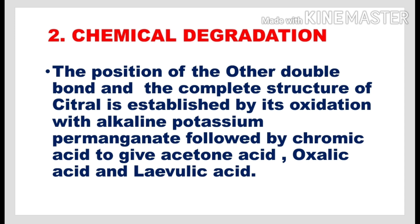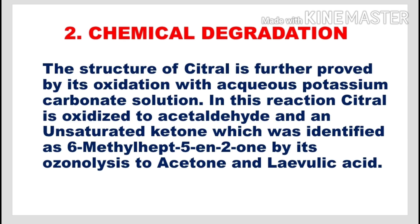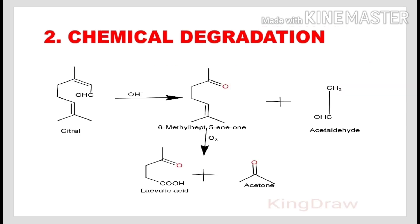The position of the other double bond and the complete structure of citrol is established by its oxidation with alkaline potassium permanganate followed by chromic acid to give acetone, oxalic acid, and levulinic acid. The structure of citrol is further confirmed by its oxidation with aqueous potassium carbonate solution, where citrol is oxidized to acetaldehyde and an unsaturated ketone. This unsaturated ketone on ozonolysis gives acetone and levulinic acid, and is identified as 6-methyl-hept-5-en-2-one, simply called methylheptenone.